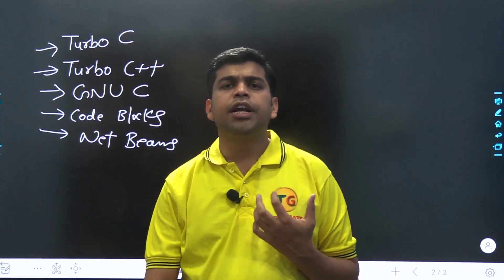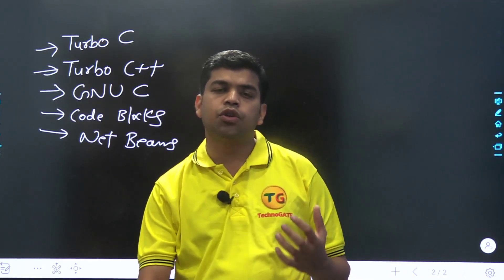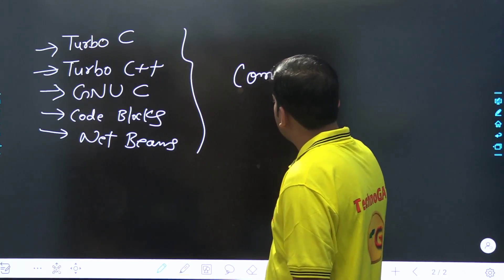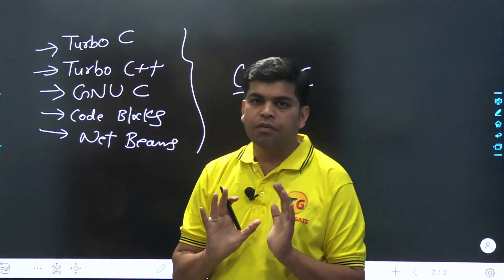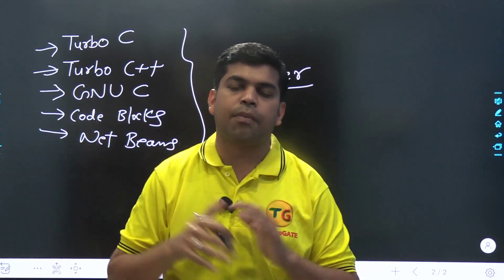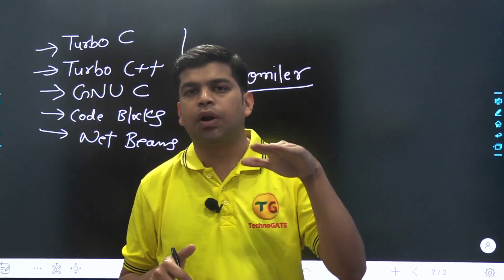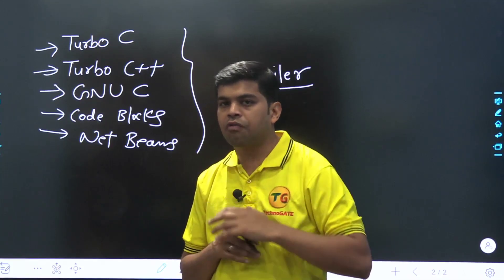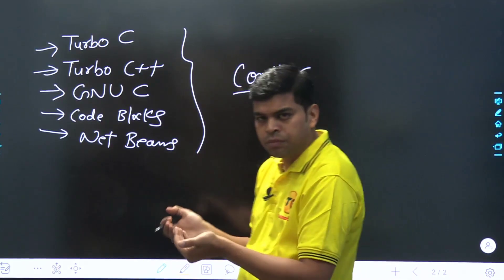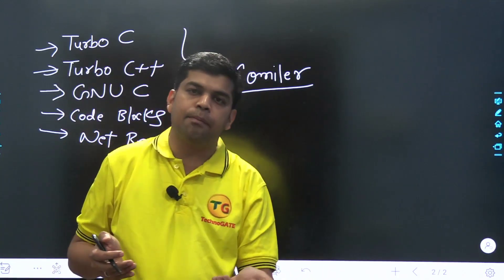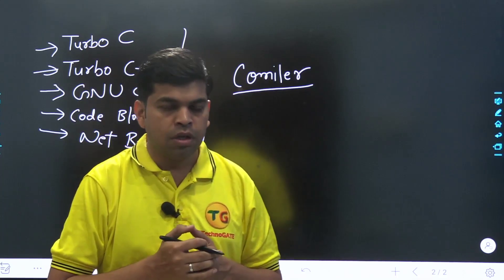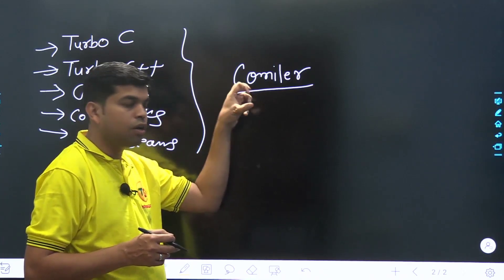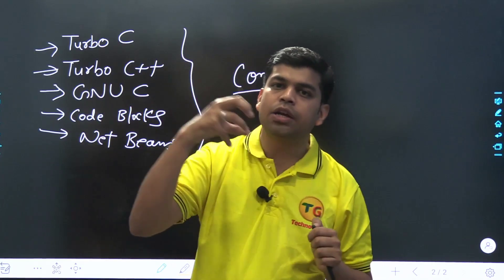Now we need to understand the flow and how to execute the program. The compiler is used to run the program. If you are using the C compiler, then you are able to run the C program. The compiler is used to translate — it is a translator that runs the code. It takes the source code and translates it.